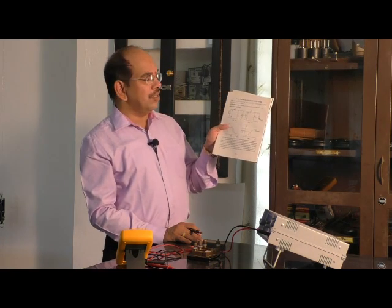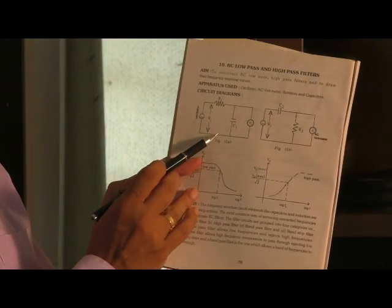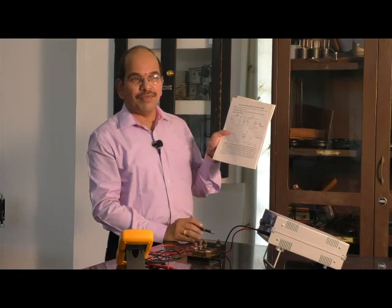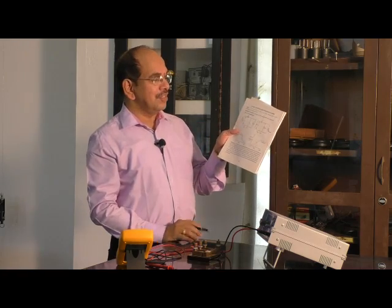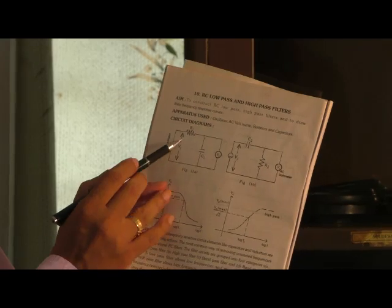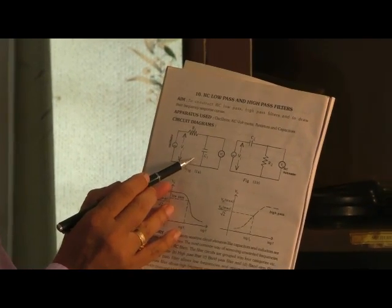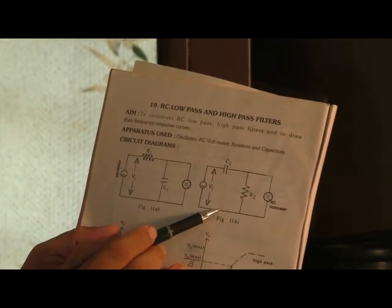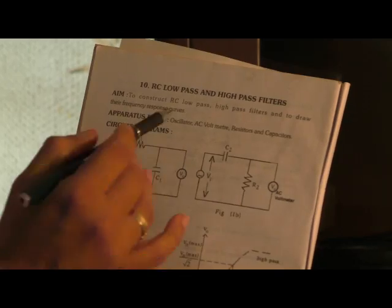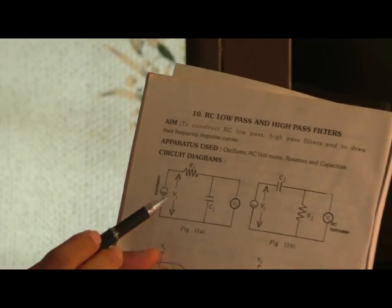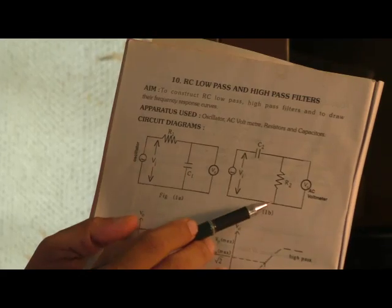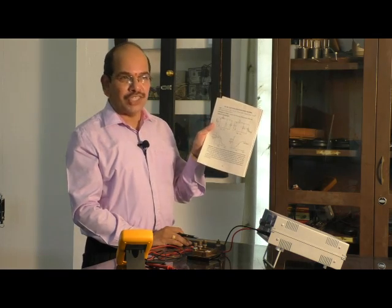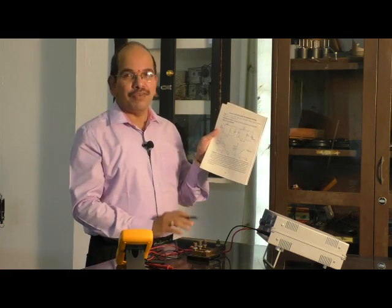What you see on the screen is a low-pass filter circuit and a high-pass filter circuit. Both circuits are made up of RC combinations. This is a low-pass filter — a circuit which allows only lower frequencies to pass through. Whereas the high-pass filter allows only higher frequencies to pass through. These filter circuits are used in sound systems to separate out sounds of different frequencies.